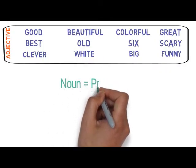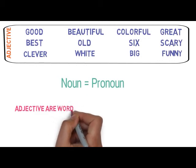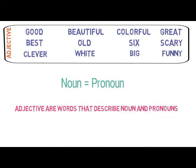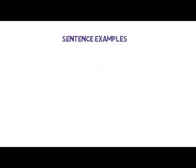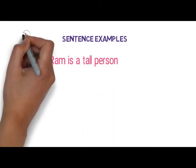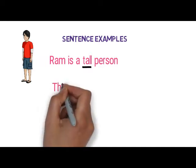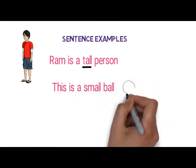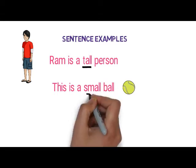Don't forget that nouns and pronouns are technically related. A pronoun is a word that is used instead of a noun or a noun phrase. Adjectives are words that describe nouns and pronouns. Let's look at some examples to make things even clearer. Rem is a tall person — here, tall is the quality that describes Rem, so it is an adjective. This is a small ball — with the word small, we learn about the size of the ball, so it is an adjective.